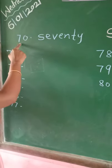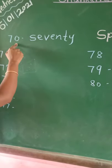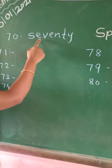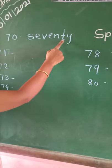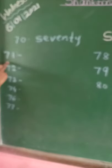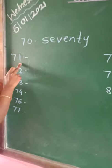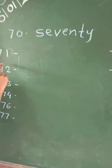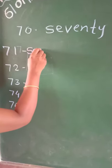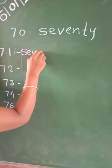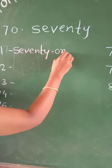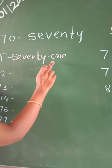Now see here, students — which number is this? 70. The spelling of 70 is S-E-V-E-N-T-Y. Now I will show you how to write the spelling of 71. First, I will write the spelling of 70: S-E-V-E-N-T-Y, then O-N-E, 1 — seventy-one, 71.